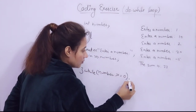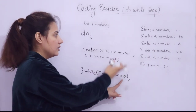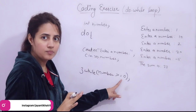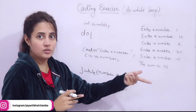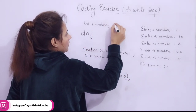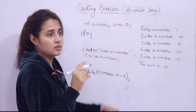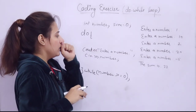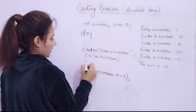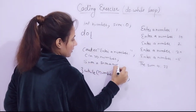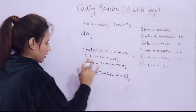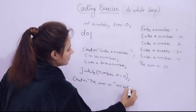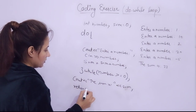The while condition is: number greater than or equal to 0. While the number is non-negative, the loop repeats. As soon as you enter a negative number, the loop terminates. We also declare a variable 'sum' and initialize it to 0 — better to initialize it, otherwise it may take some garbage value, and adding to a garbage value gives an unexpected result. Then after the loop, we print 'the sum is' followed by the sum variable.